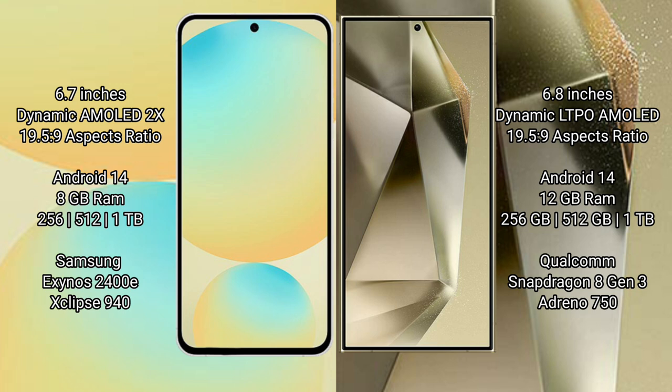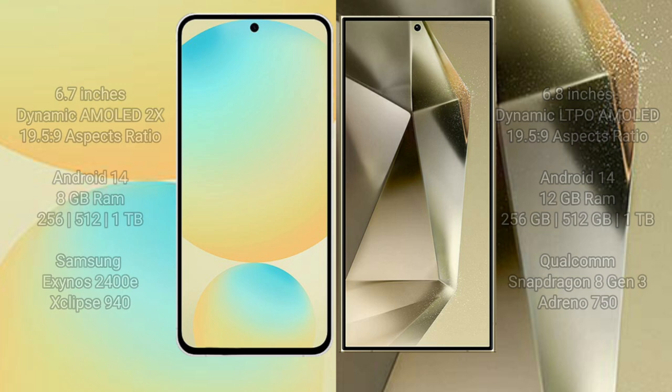Samsung Galaxy S24 Ultra has 8GB RAM and 256GB, 512GB, or 1TB/2TB internal storage. It is powered by the Qualcomm Snapdragon 8 Gen 3 processor with GPU 750.